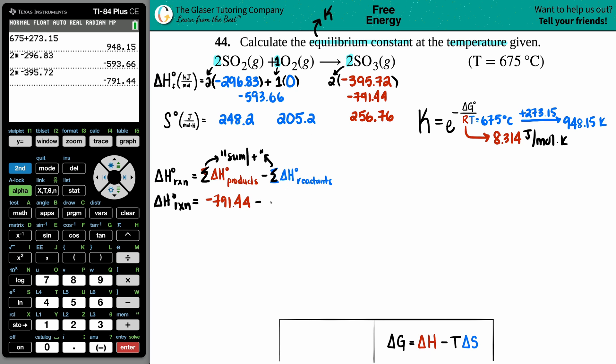ΔHrxn equals the products -791.44 minus the reactants -593.06. I love the TI-84 because I can just go up and input the numbers. This minus that value - press enter - and we get -197.78 kilojoules. That's the overall ΔH for this reaction. It's exothermic.